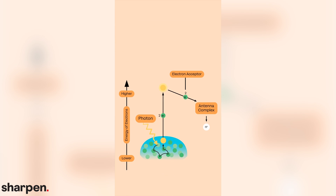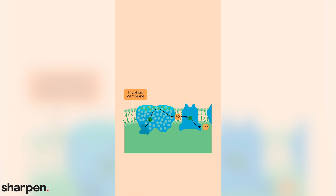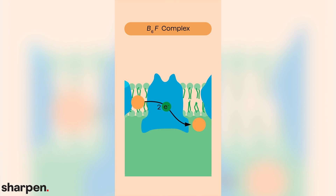Despite its name, photosystem II acts first in light-dependent reactions. It captures shorter wavelengths of light than photosystem I, which carry more energy. The electrons energized in the reaction center of photosystem II are gained by oxidizing water. These energized electrons are passed along the thylakoid membrane to the proton pump B6F complex, where energy from these electrons is used to pump protons across the thylakoid membrane. This concentration gradient ultimately powers the production of ATP through a process called chemiosmosis.